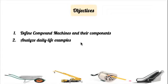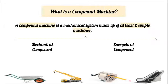So let's now proceed with the definition of a compound machine, which was actually already given at the beginning of this stage. A compound machine can be defined as any mechanical system made up of at least two different simple machines. Therefore, it is simply a combination of simple machines that help to create an even greater mechanical advantage. All compound machines have two different sets of components: a mechanical component and an energetical component.